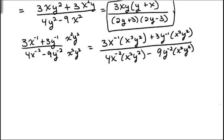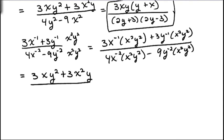Now we need to do that multiplication. We'll have 3, and then x to the negative first times x squared is x, and then we have the y squared, plus 3, and then we have the x squared, and y to the negative first times y to the second is y. On the bottom, we have 4, and x to the negative second times x squared basically cancels, so we'll have 4y squared, minus 9, and the y's basically cancel, so we'll be left with 9x squared.